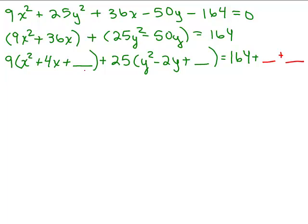and then make sure you realize whatever you add to the left side of the equation we're going to have to add to the right side of the equation. The trick is when I add something on this blank right here, when I add it inside the parentheses I have to remember that number gets multiplied by 9 so I'm really adding 9 times whatever that number is to the left side.